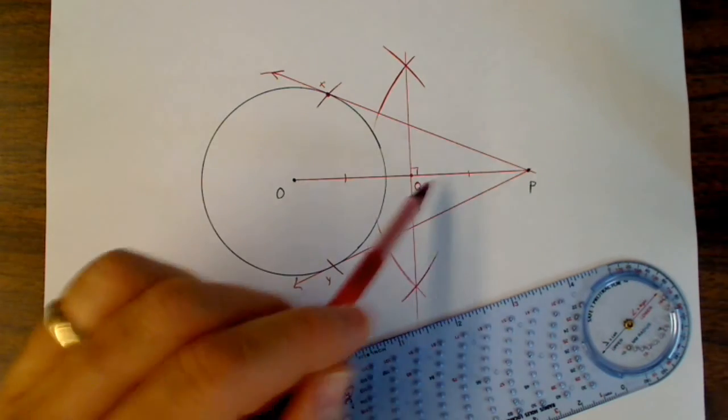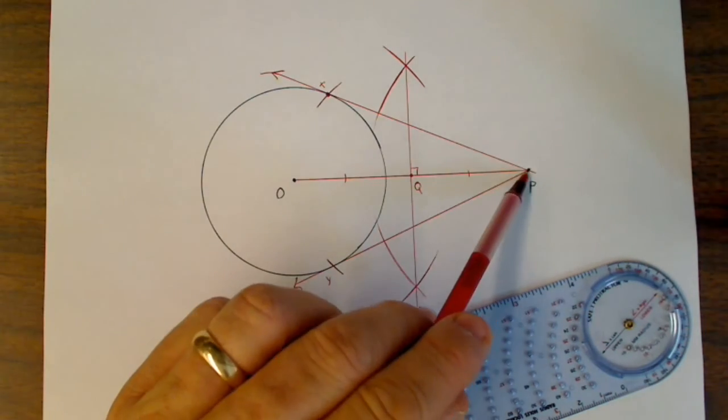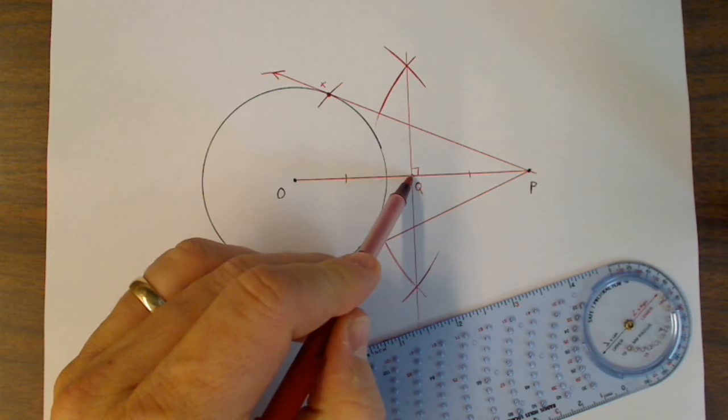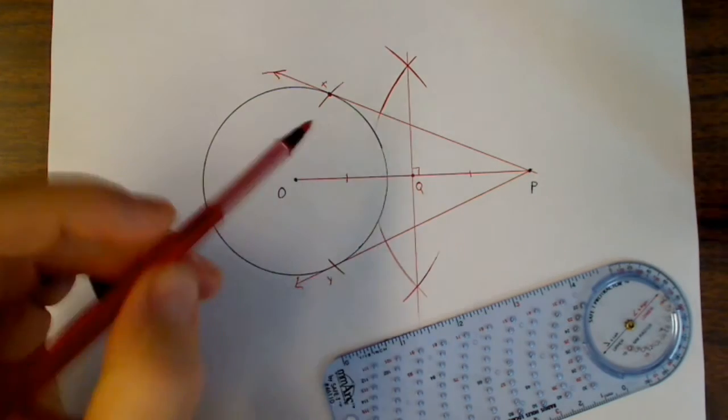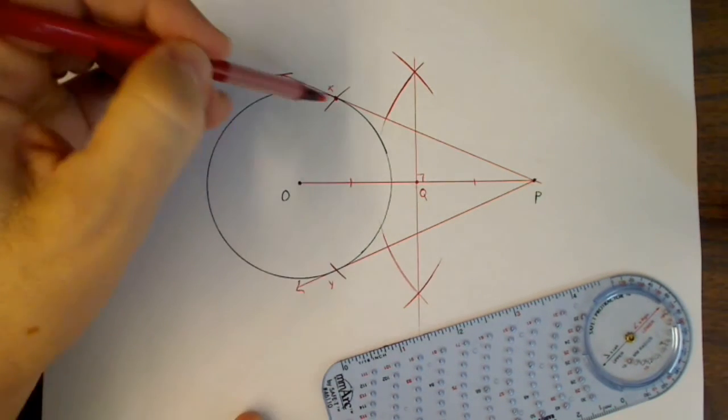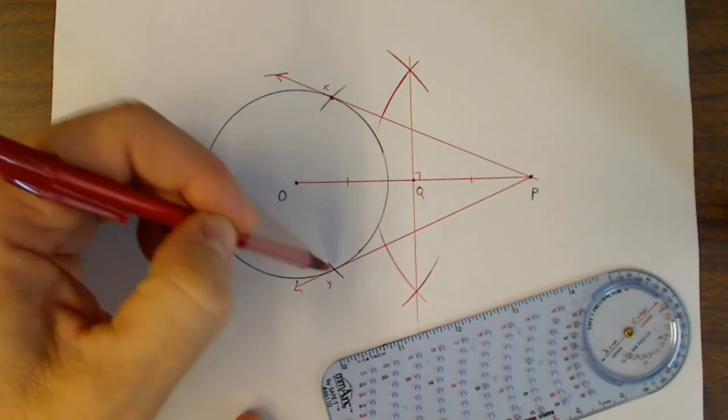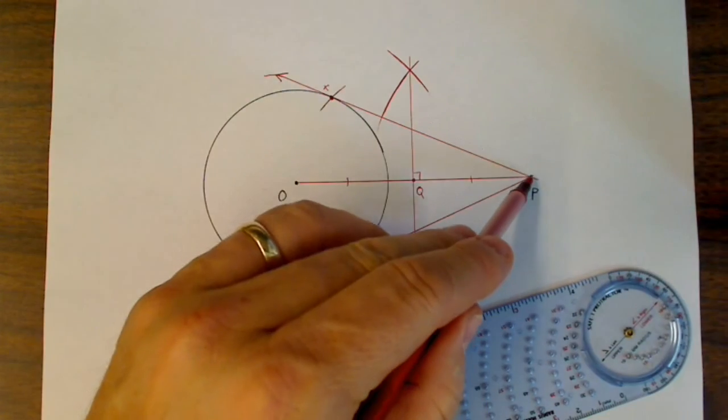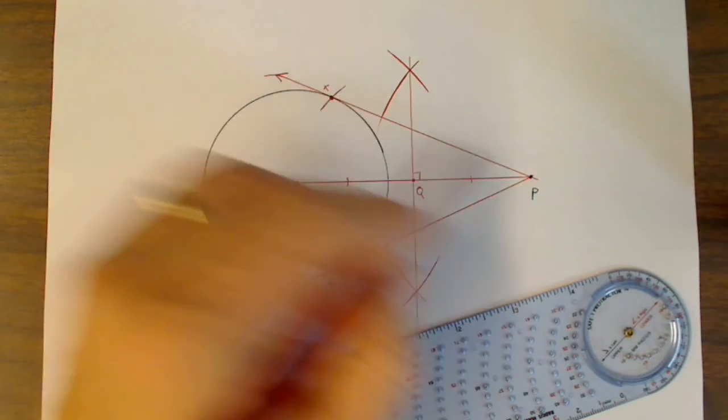Do the perpendicular bisector of the segment from the center to the outside. And then from that center of that segment, measure to the center of the circle and draw two arcs on the circle. And then merely connect point P to point X. And there you've got the tangent to the circle.